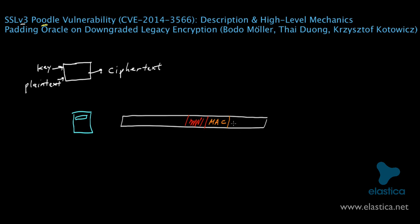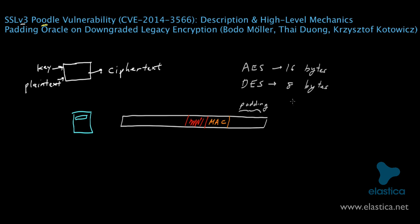After this MAC value is appended, there's some padding that has to be placed after that data in the SSL v3 protocol. This padding is placed because many popular encryption algorithms require the data they are encrypting to have a length that is a multiple of a particular size. For example, for AES the length has to be a multiple of 16 bytes, and for DES the length has to be a multiple of 8 bytes. If you don't have the right length, you can just artificially pad your data until it has the right length.